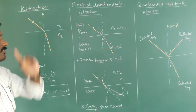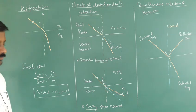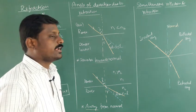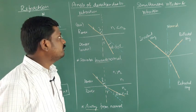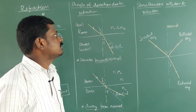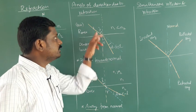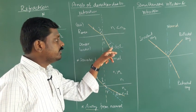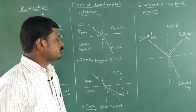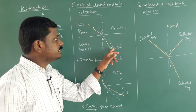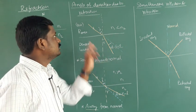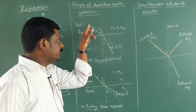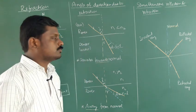Next, the angle of deviation due to refraction. The angle of deviation is the angle between the original direction and the deviated ray. The formula is d equals i minus r, when light travels from a rarer medium to a denser medium.